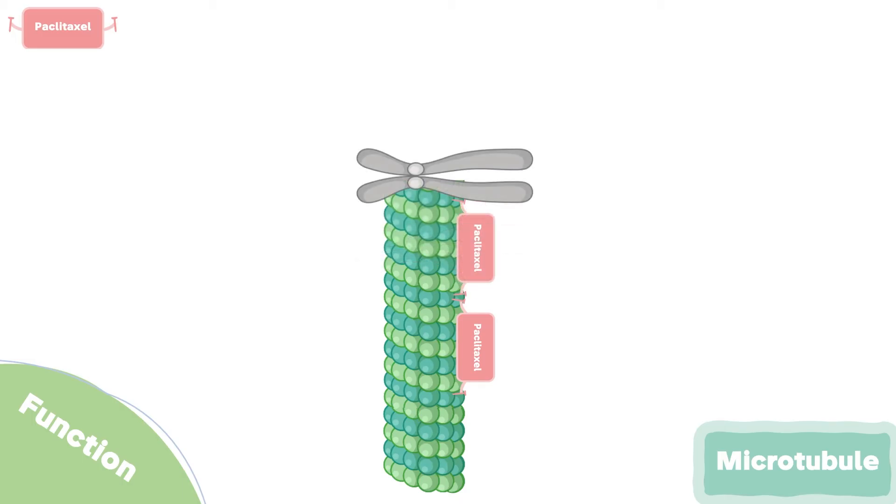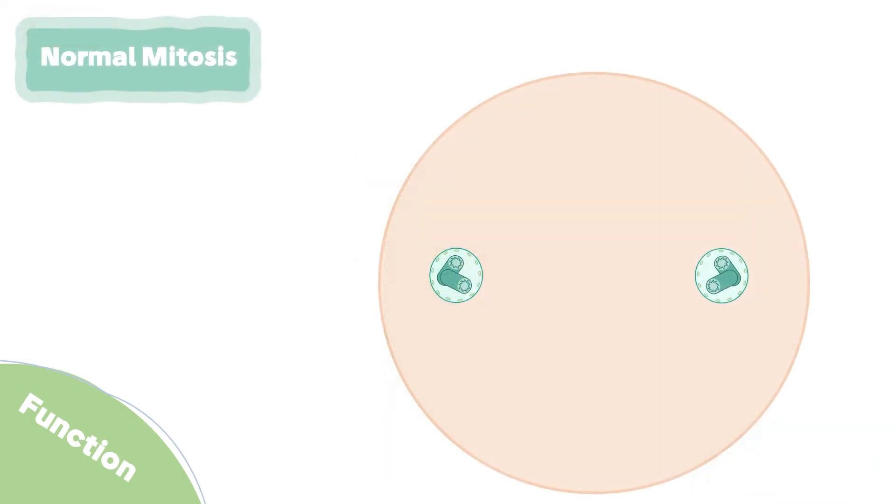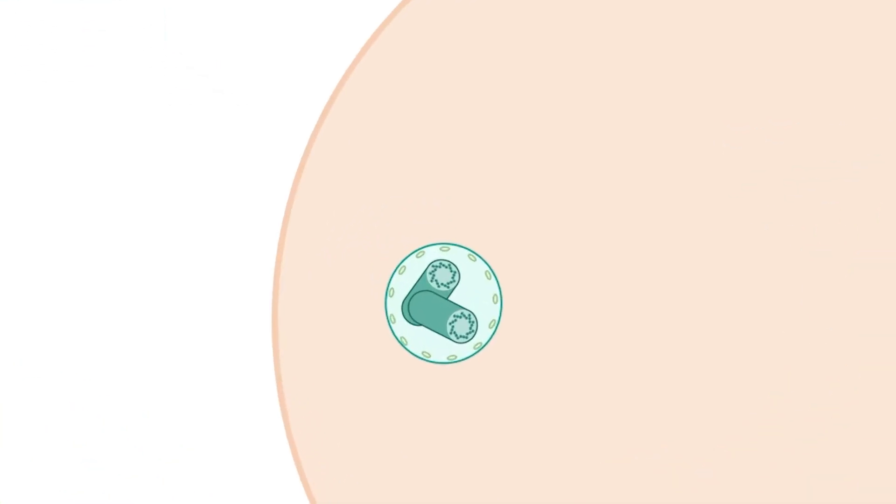Let's see how their function will appear under the microscope. During normal mitosis, there are two centers which make the microtubules. Each center is called a centriole.